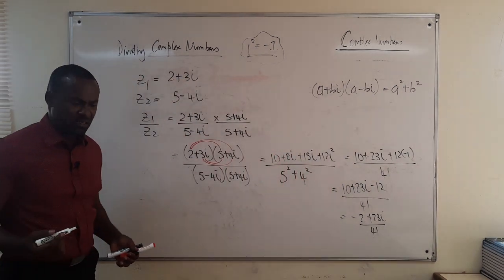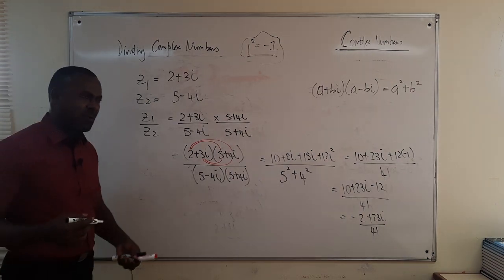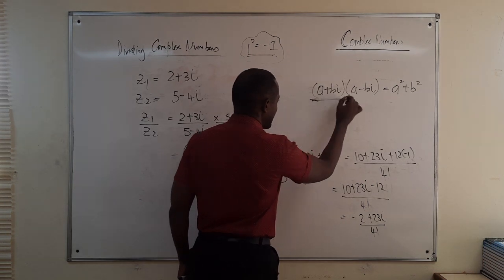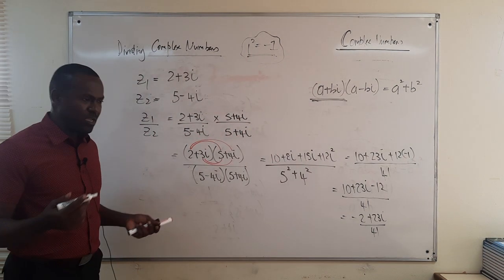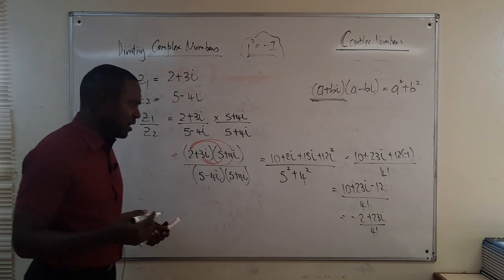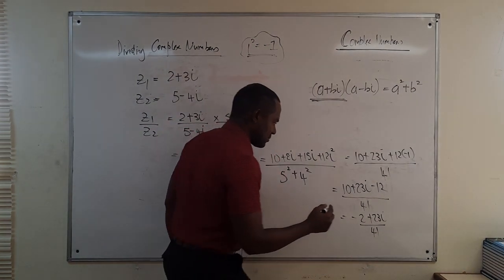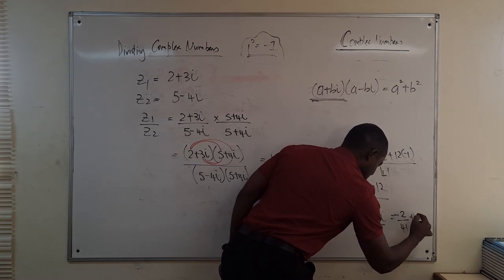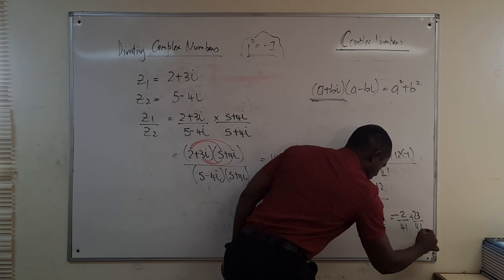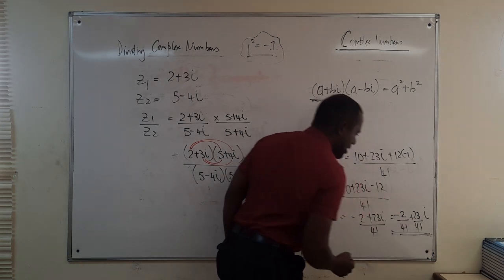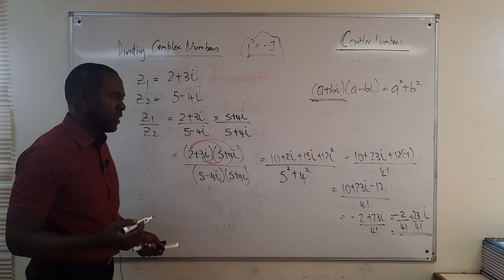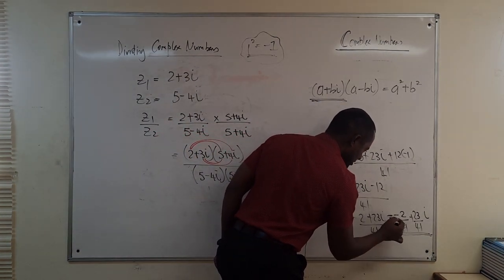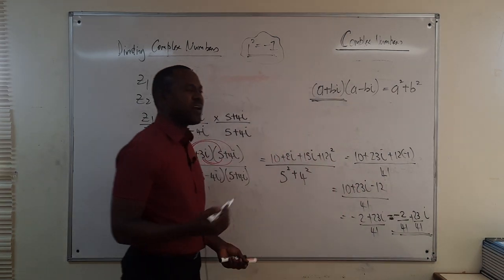The result is minus 2 plus 23i over 41. This can be left in this form, but you may be required to express it clearly as a plus bi, where the real part and imaginary part are separately identifiable. That concludes this first example of dividing two complex numbers.